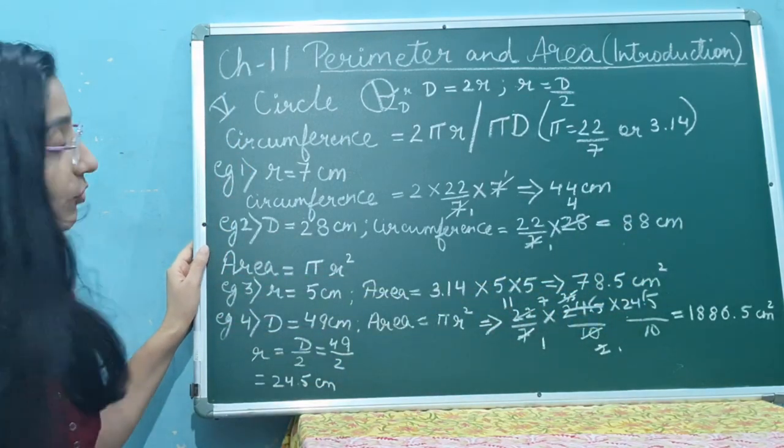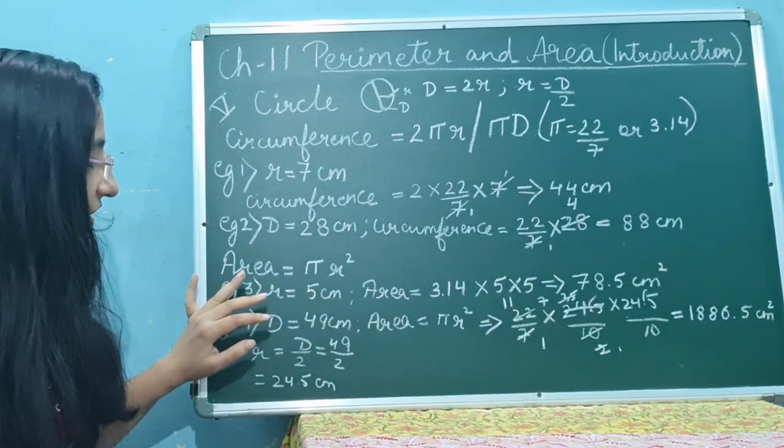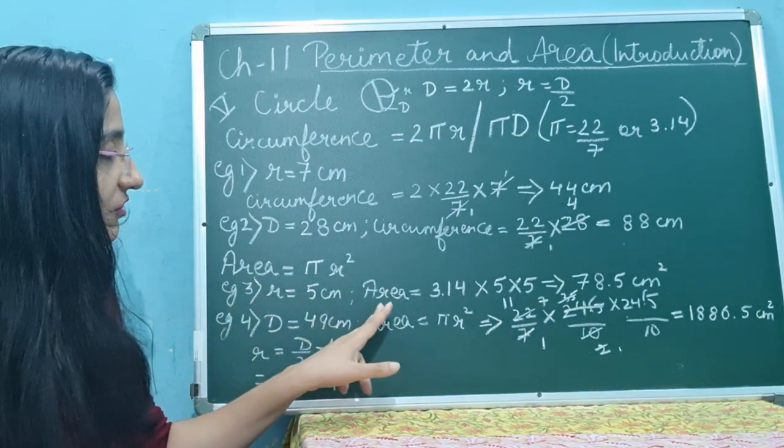The second example is area. Area is πR², that means R into R. There are two examples. The first example is radius mentioned. The radius is 5 cm. So in this case, the area will come.